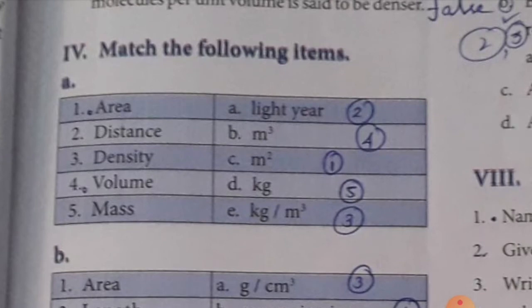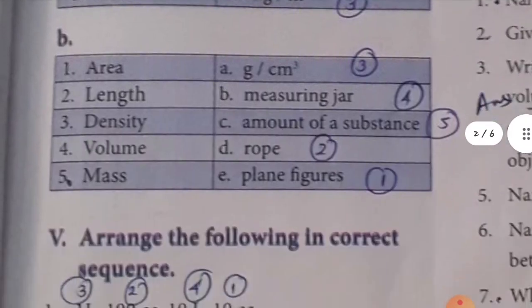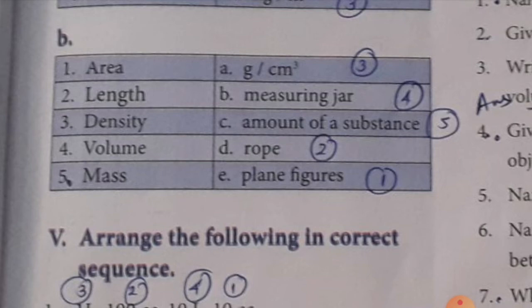Match the following, section A: area — meter square; distance — light year; density — kilogram per meter cube; volume — meter cube; mass — kilogram. Section B: area of a plane figure — length, take a rope; density — gram per centimeter cube; volume — measuring jar; mass — amount of substance.